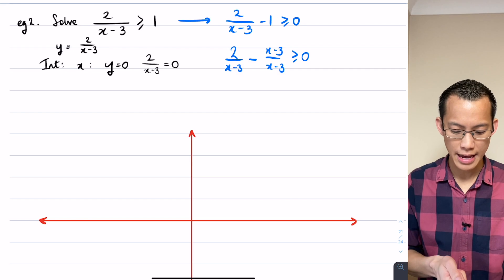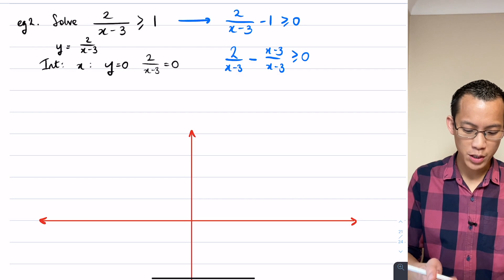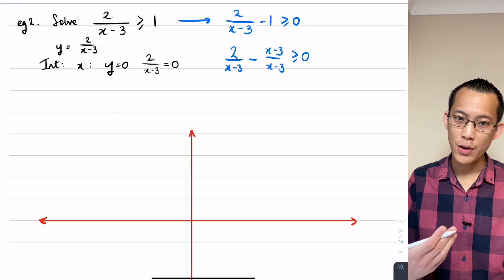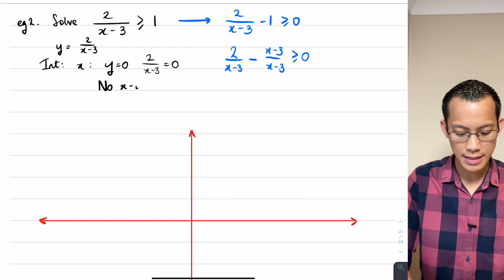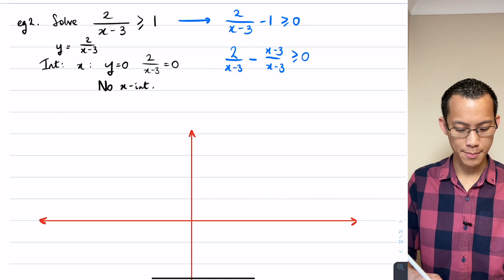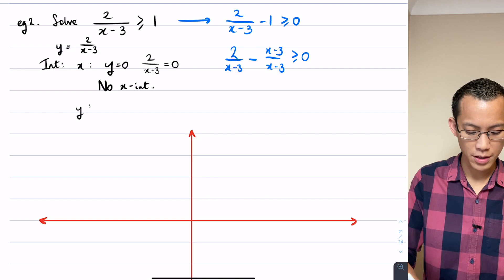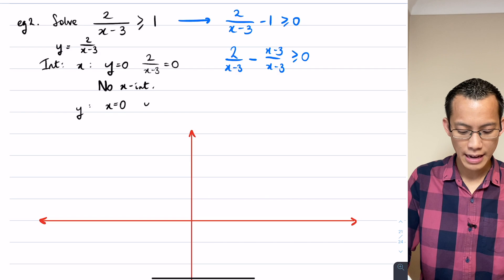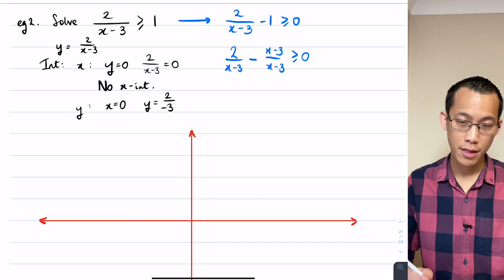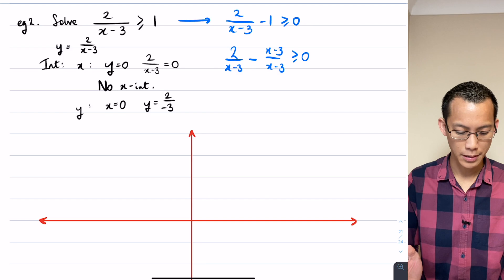And it looks to me like the answer is no, there's no value of x you could put in there that would make this thing 0. So what that means is there's no x-intercept, that's what I was searching for but I can't find one. So I say there's no x-intercept but I'll look for a y-intercept and the way I do that is by letting x equals 0 and this is much better. I get y equals 2 over negative 3, so negative 2 thirds.